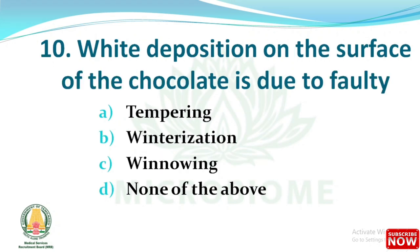Next question: white deposition on the surface of chocolate is due to faulty what? The options are tempering, winterization, renewing, and none of the above. The right answer is option A: tempering.